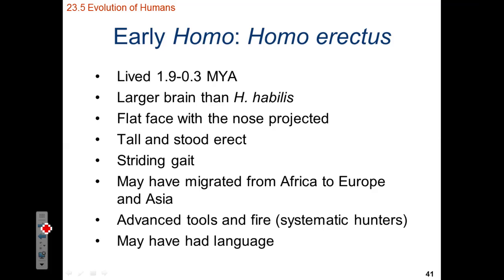Homo erectus is the newer species compared to Homo habilis and died out approximately 300,000 years ago. Homo erectus had an increased cranial vault size — a larger brain — a flatter face, and stood tall and erect with a striding gait based on the fossil record. It's hypothesized that Homo erectus left Africa and went to Europe and Asia. More advanced tools are associated with its fossil sites, and the use of fire is attributed to this organism. It is believed that Homo erectus was a systematic hunter and also had language capabilities.